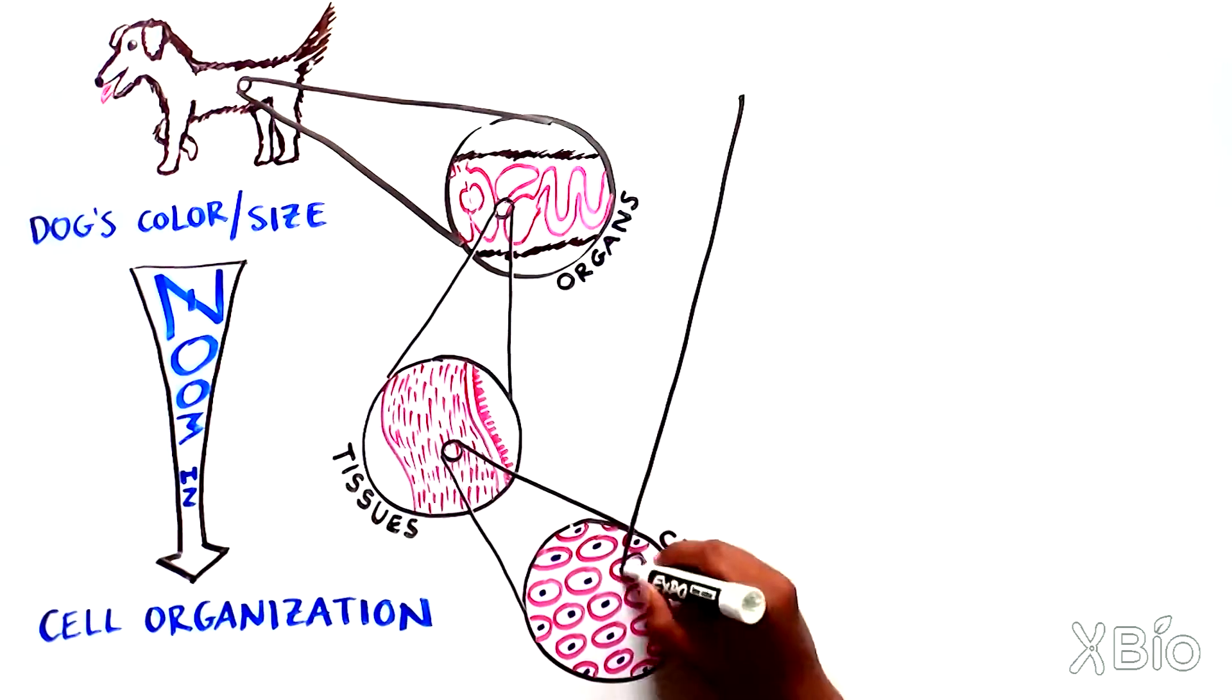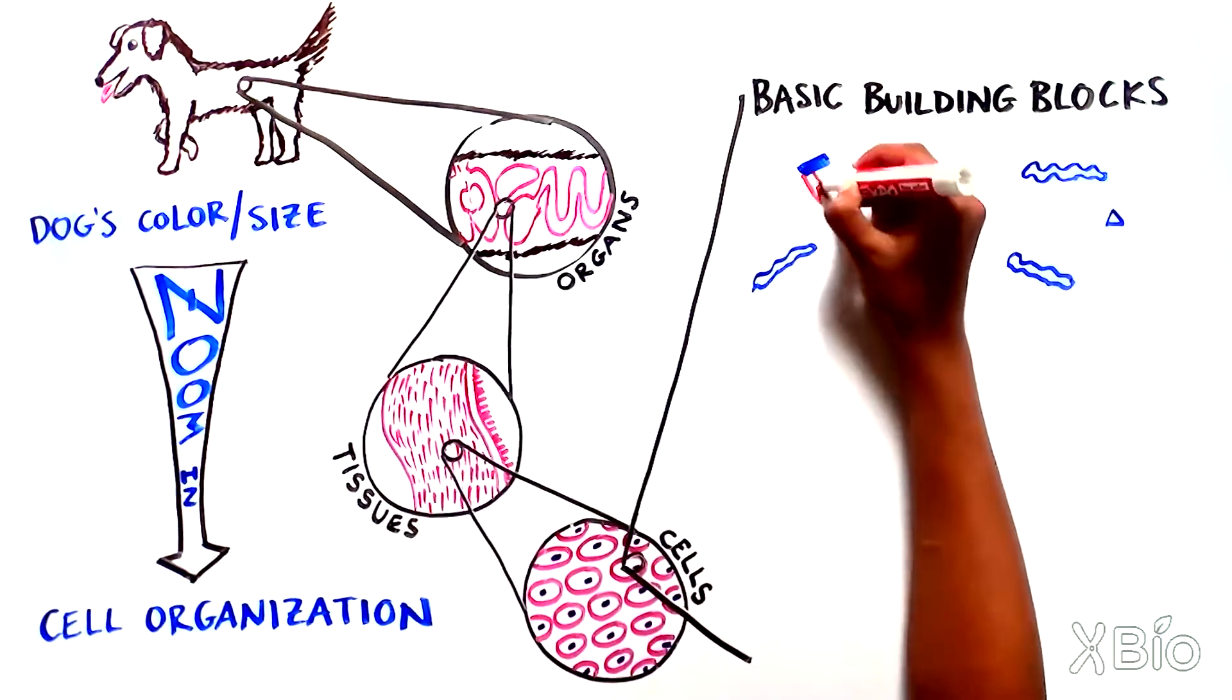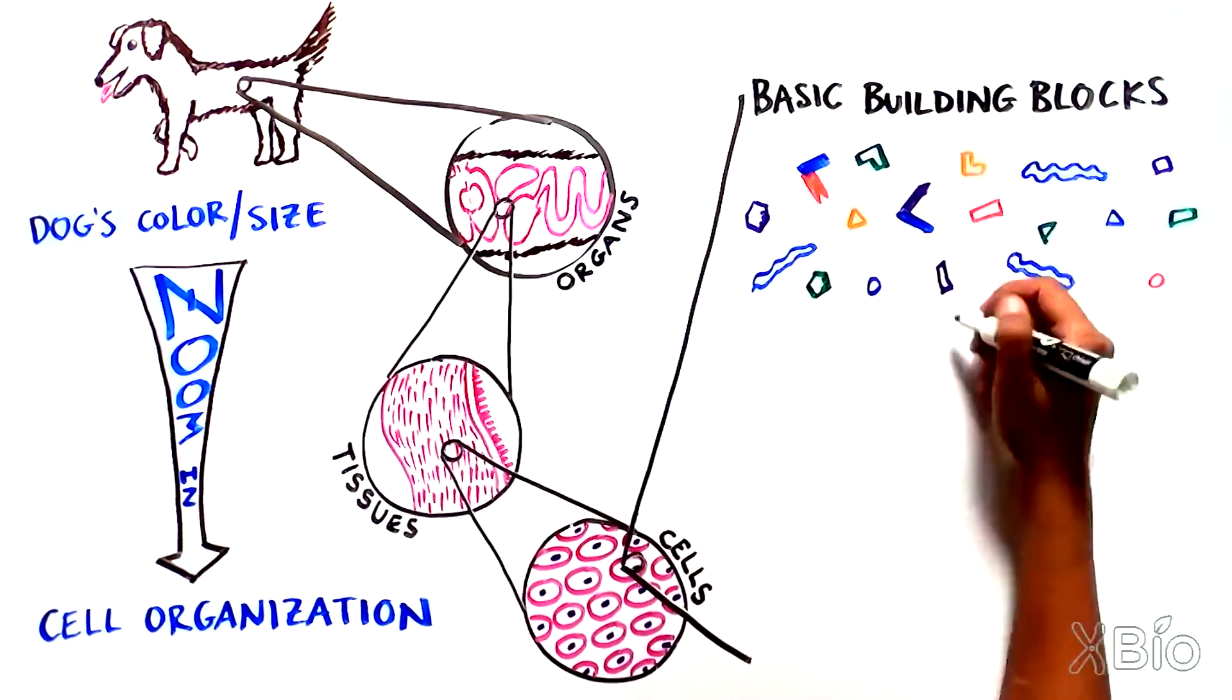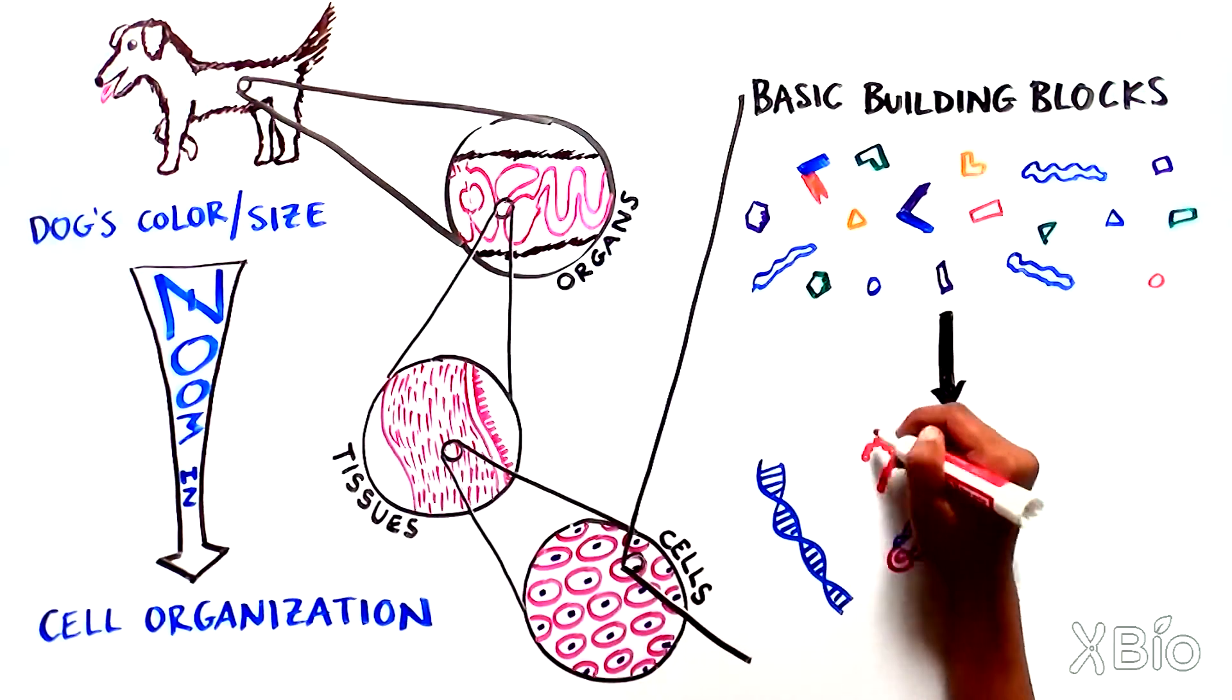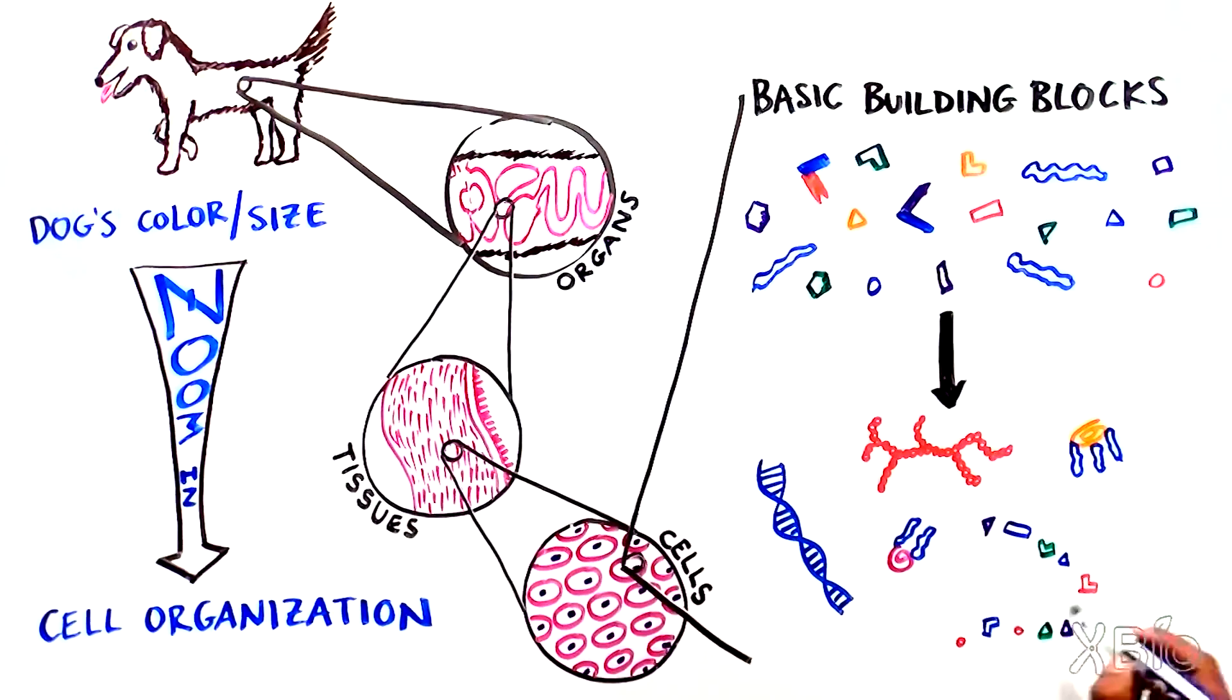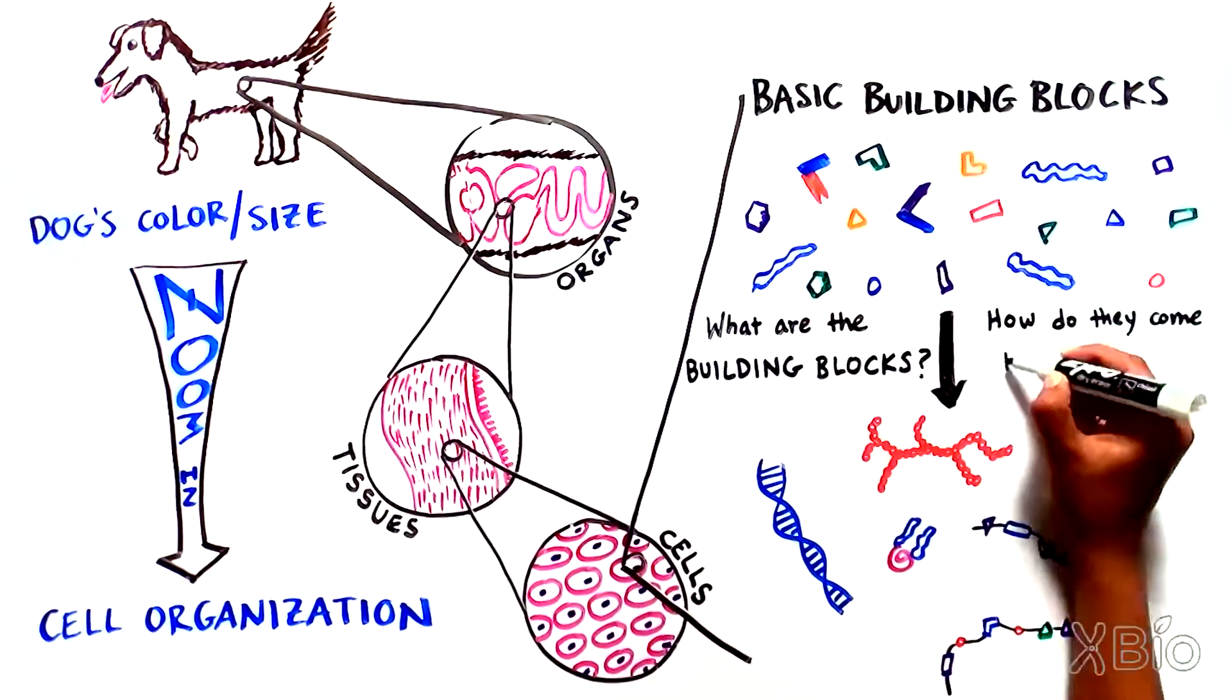If we keep zooming in, we'll start to see that, in fact, everything is built of the same few basic building blocks, which join together in complicated ways to form larger structures that eventually build the cuddly dog you can recognize with the naked eye. Let's take a look into the very smallest levels, the small and large molecules of the cell, to understand what these building blocks are and how they come together.